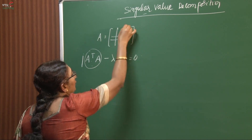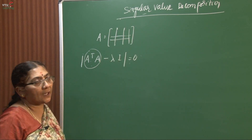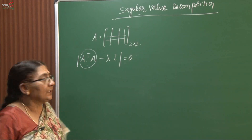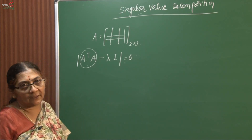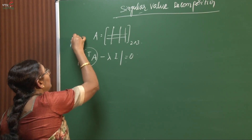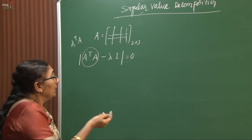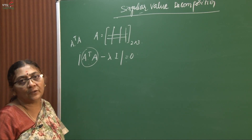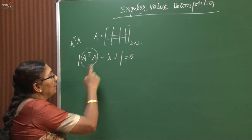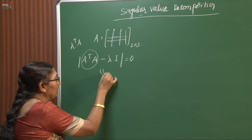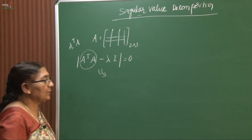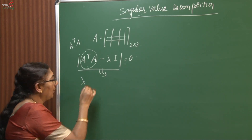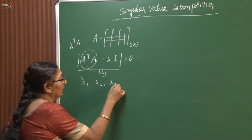The reason we take A transpose times A is that the given matrix may be rectangular, say 2 cross 3, and it is not possible to find eigenvalues directly. That is why we first convert it into a square matrix by multiplying A transpose times A. From the characteristic equation — det(A^T A - lambda I) = 0 — we solve and get eigenvalues lambda 1, lambda 2, lambda 3.